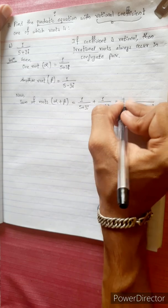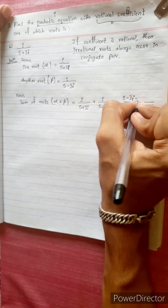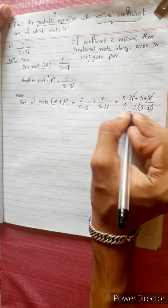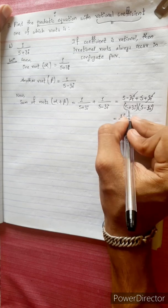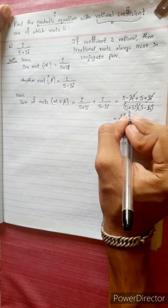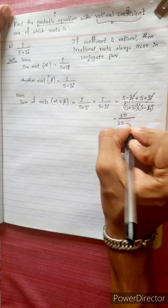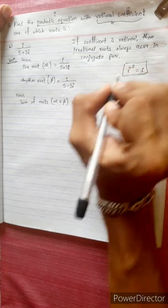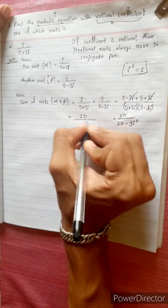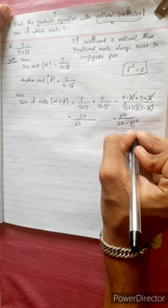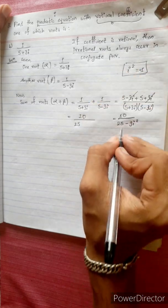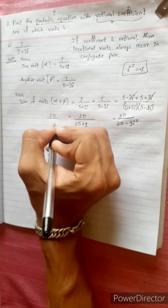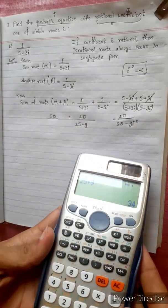The numerator: (5-3i) plus (5+3i) — the 3i terms cancel — giving 10. The denominator uses (a+b)(a-b): 25 minus 9i². Since i² equals -1, we get 25 plus 9 equals 34. So sum of roots equals 10/34 equals 5/17.